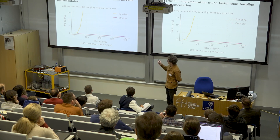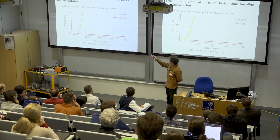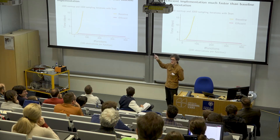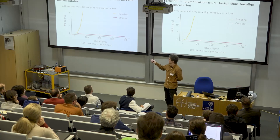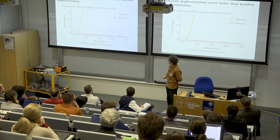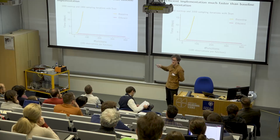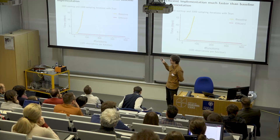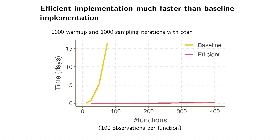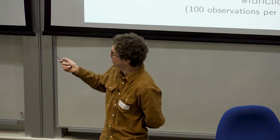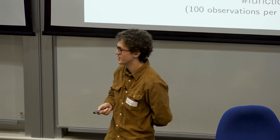Here I have a benchmark plot with time in days on the y-axis to do a thousand warm-up and a thousand sampling iterations in Stan, with the number of functions observed on the x-axis. We are interested in around a hundred functions. A baseline Stan implementation — what you would do without thinking hard about this specific example — scales extremely poorly. I started becoming unpopular on my server, so I started thinking about how fast we can actually go without approximating the Gaussian process, and it turns out fairly fast.